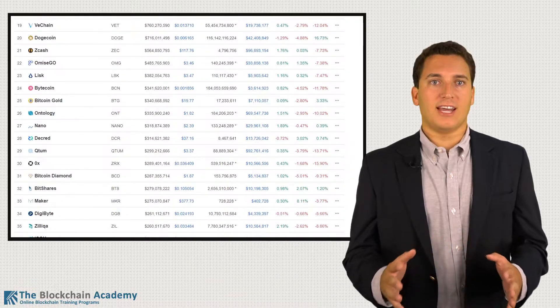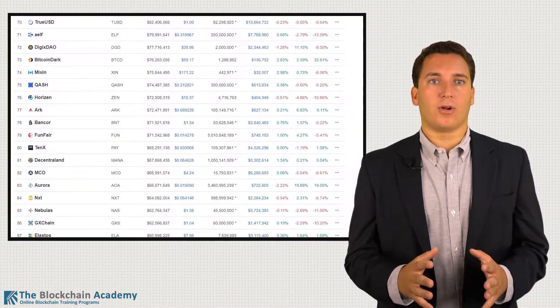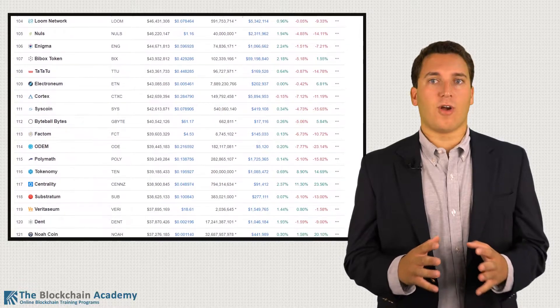It's important to remember that there are many other cryptocurrencies besides Bitcoin in circulation. Today, there are over 2,000 cryptocurrencies on the market. That number continues to grow each day.